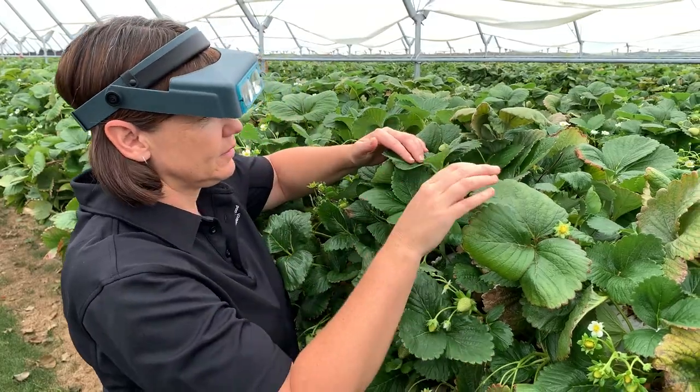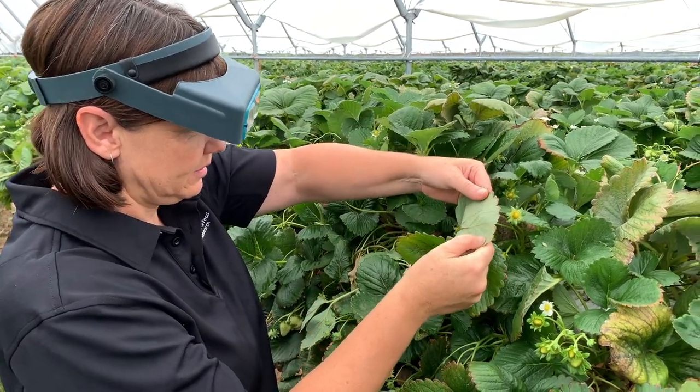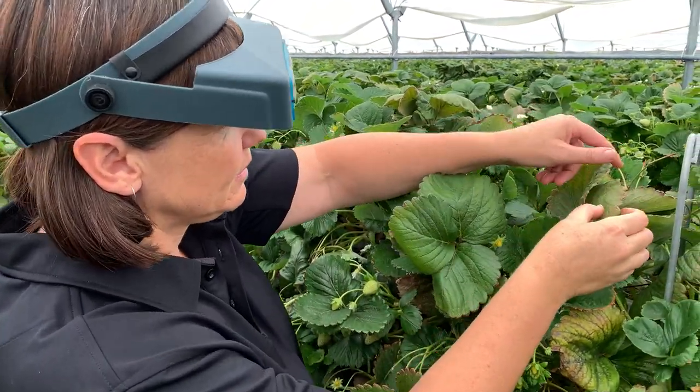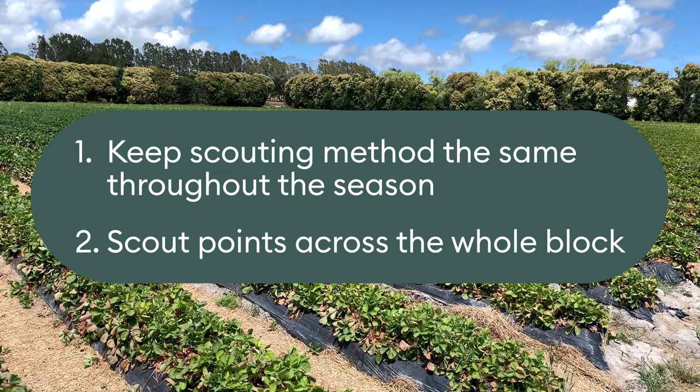Scouting is carried out at least every two weeks. We usually switch to weekly scouting once pest levels start to increase as their numbers can rise very quickly, especially when it's hot. Bioforce will use two-weekly scouting in field crops but one-week scouting in greenhouses and tunnels. Whatever design you use, the two most important things to remember are to keep your method the same throughout the season and to scout points across the whole block.